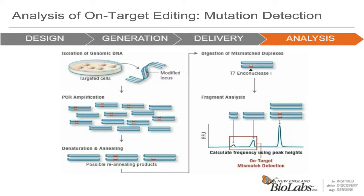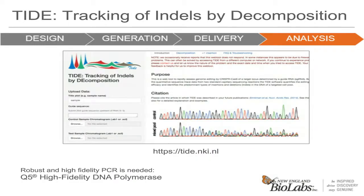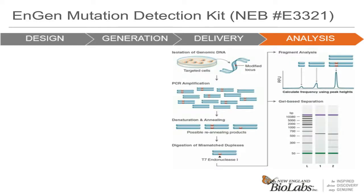Another method for calculating editing efficiency is by doing TIDE analysis, which stands for Tracking of Indels by Decomposition. This is essentially sequencing of the pool of DNAs and computational analysis to get a distribution of the mutations, which not only gives you editing efficiency but also a picture of the size distribution of these edits or indels. We would recommend using a high-fidelity polymerase such as Q5, which is robust and able to sequence through a wide variety of GC contents.